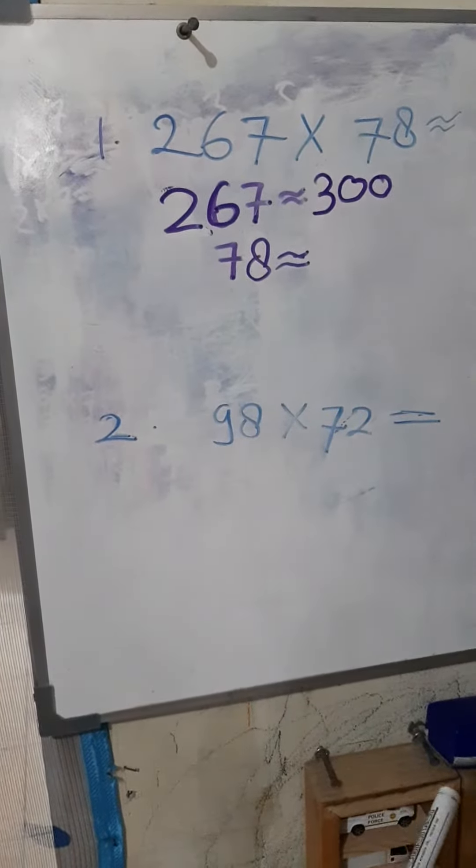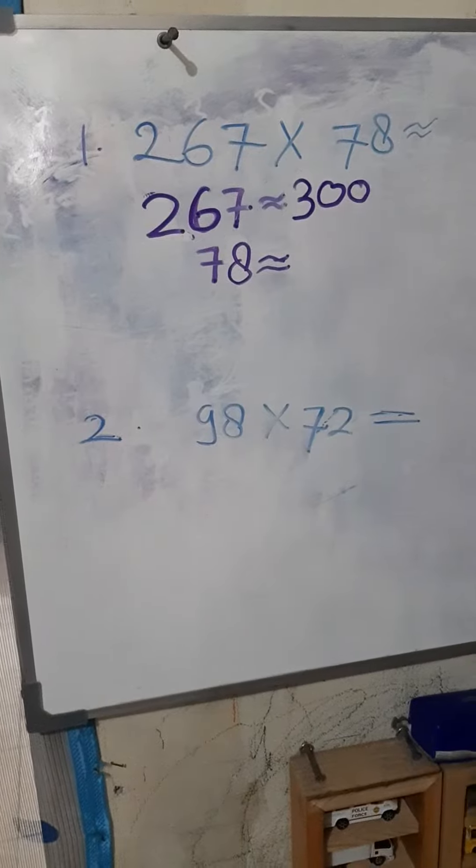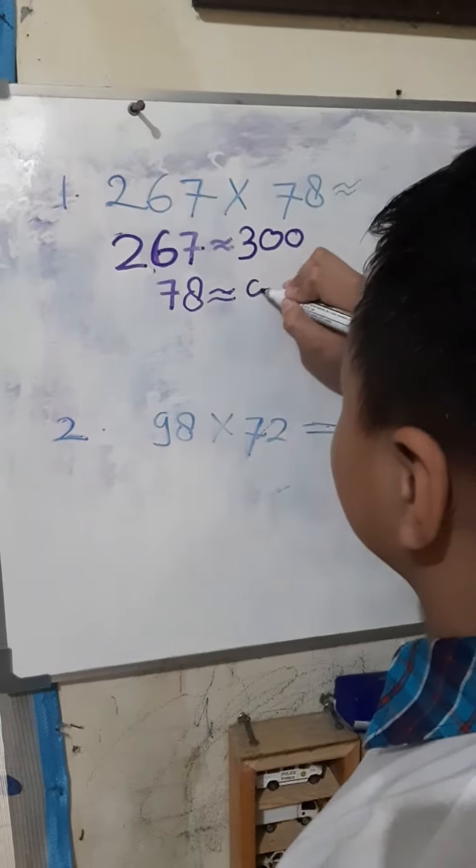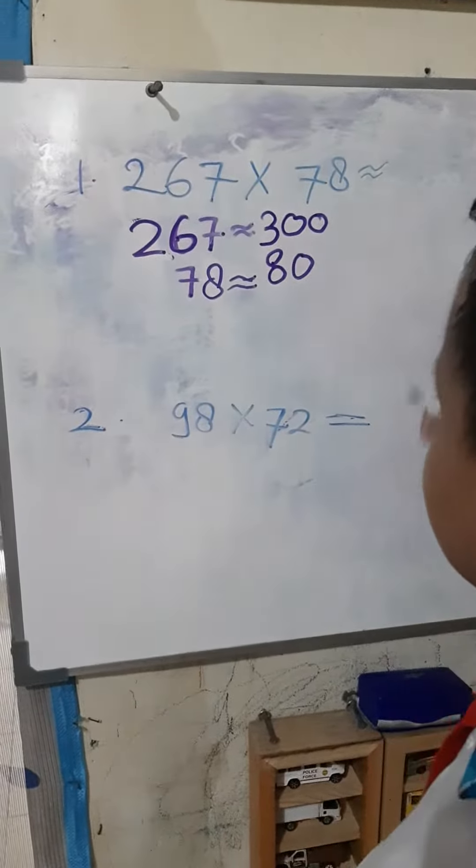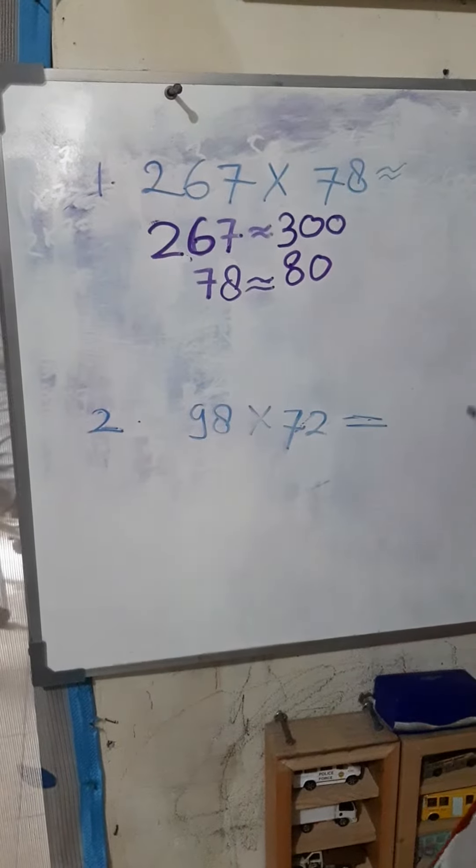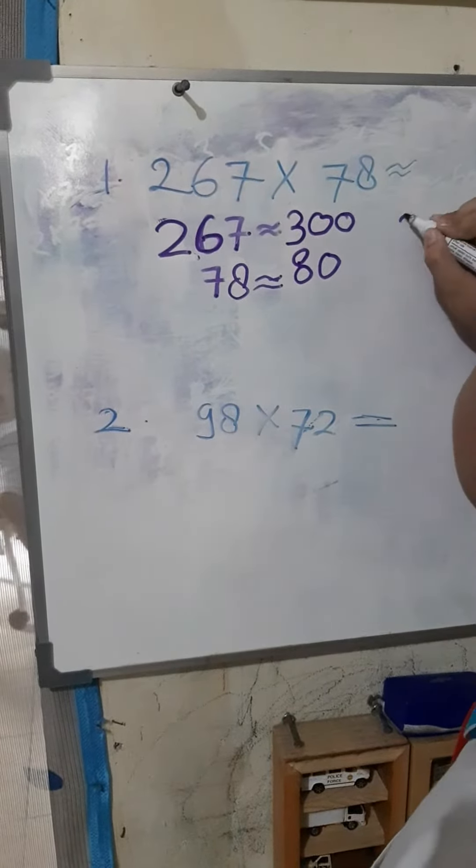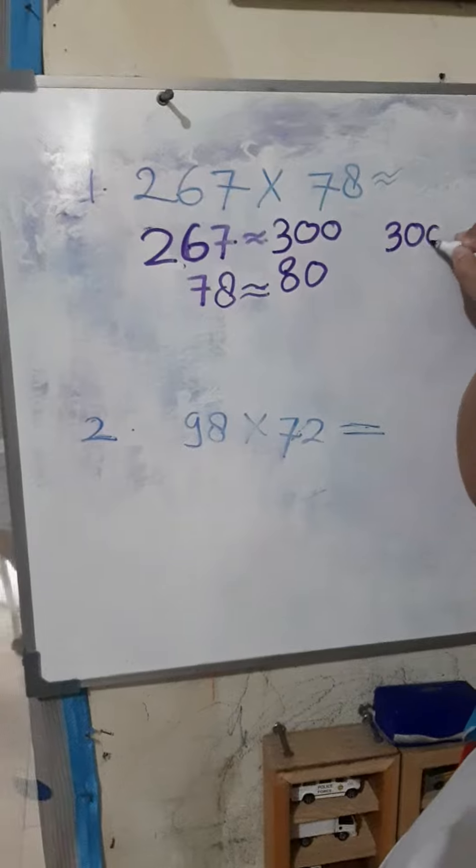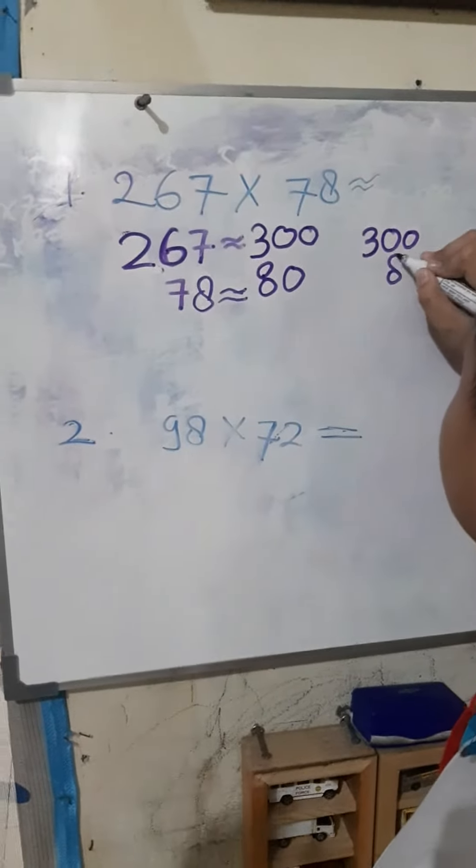Now we change again 78 to the nearest 10. The answer is 80. Now we times. We multiply. 300 times 80.